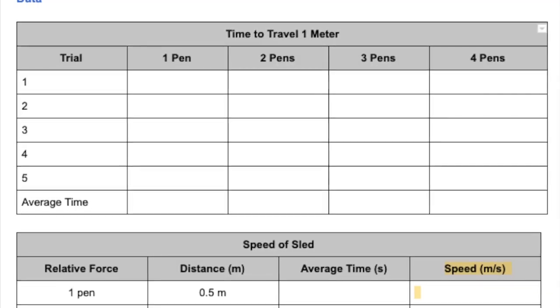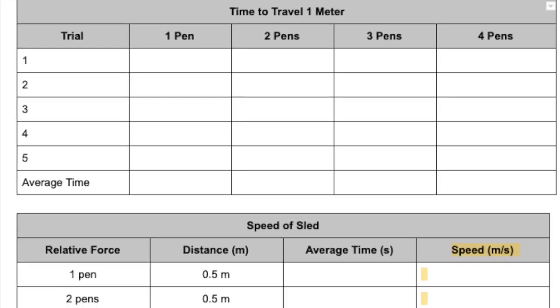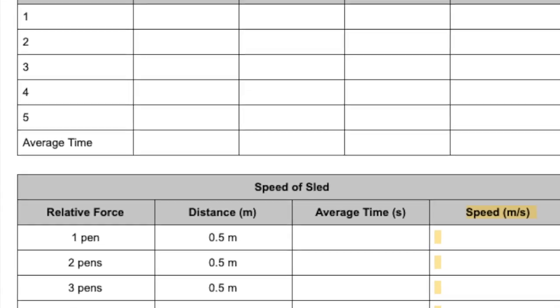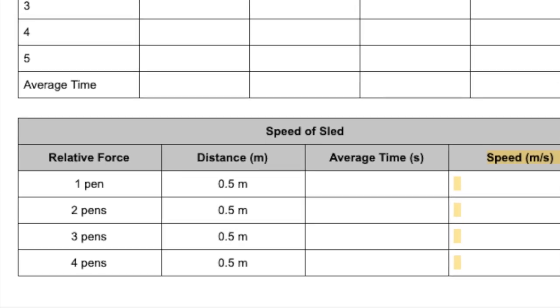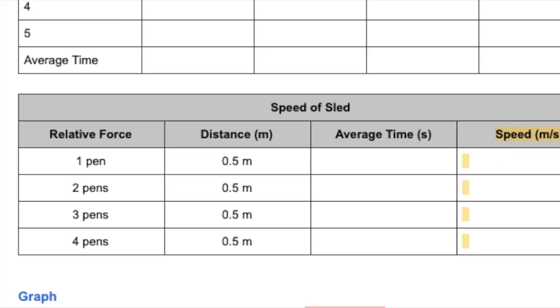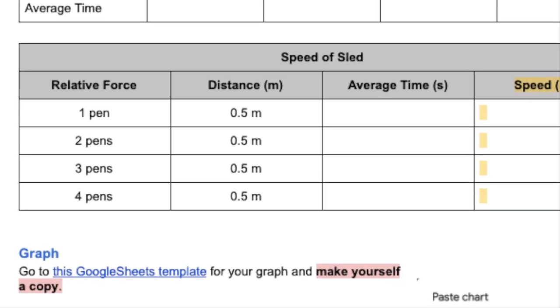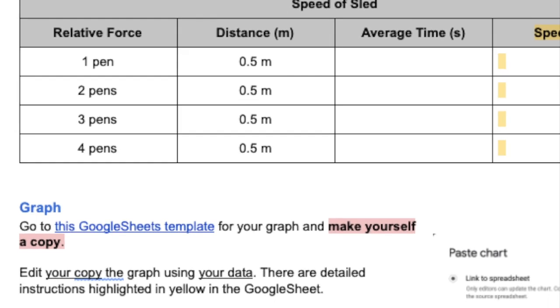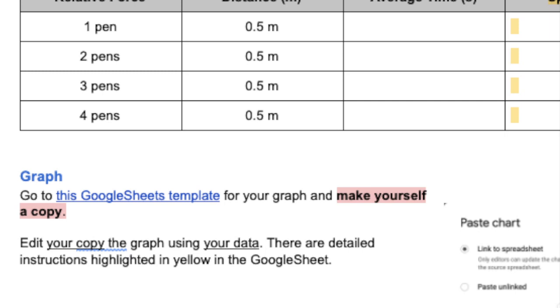You will be repeating this experiment five times to help accuracy. You'll average your data together. To analyze it, you'll first convert those times into speeds to look at the various speeds of the object. When you're done with that, you'll look at the instructions on the lab for creating a graph. You will make a copy of a Google sheet that's been provided in the instructions and create the graph in that document.